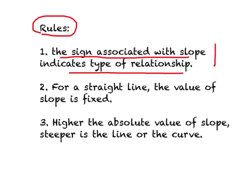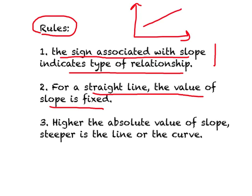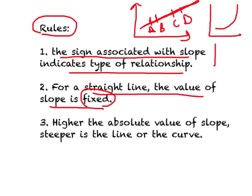The second rule you should know is that for a straight line, the value of slope is a fixed number. For example, here is a line — suppose I ask you to find the slope between points A and B, and also between points C and D. Between any two points on a straight line, the value of slope will be the same fixed number, whatever it may be. But if you are looking at a curve, the value of slope goes on changing — but that's something we'll consider later.